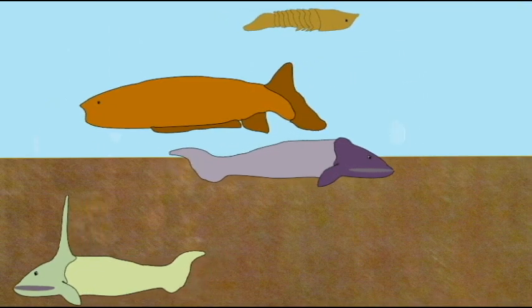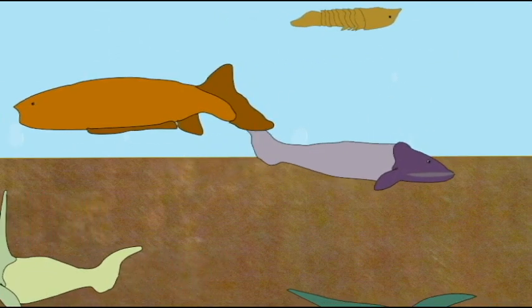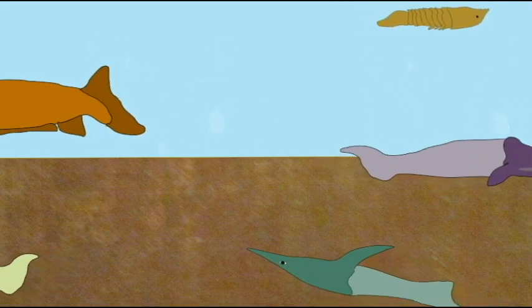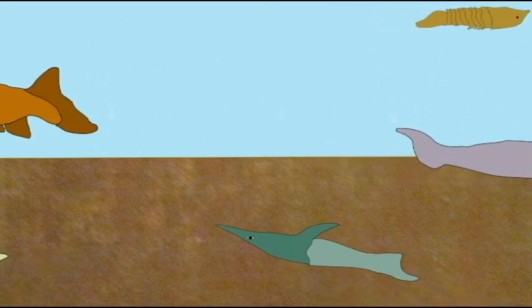The majority seemed to have been filter feeders, some in open water. Some, as they developed heavy head shields, probably were bottom feeders and were rather slow.